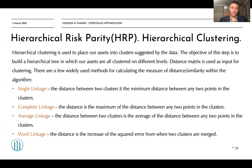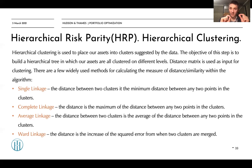Hierarchical clustering is used to place our assets into clusters suggested by the data, using the covariance and correlation matrix to build those clusters. The objective is to build a hierarchical tree where assets are clustered at different levels. A distance matrix is used as input for clustering. Similar to the theory-implied correlation matrix work we've done, we already converted our correlation matrix into a distance matrix, since distance matrices preserve important statistical properties that make them easier to work with.